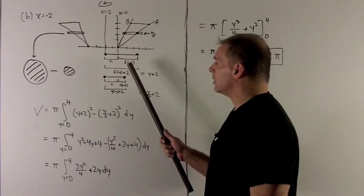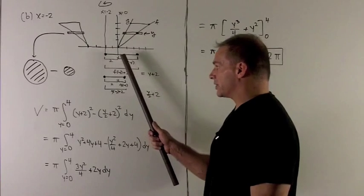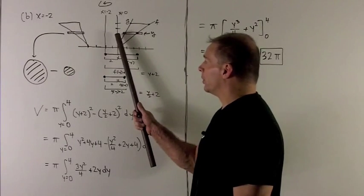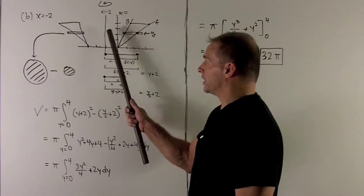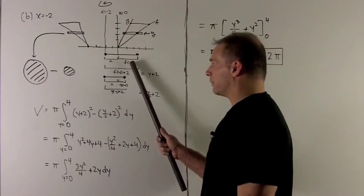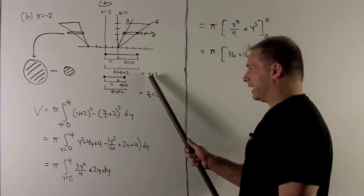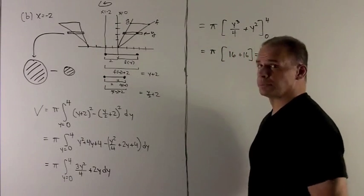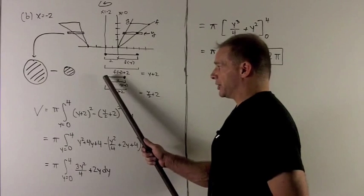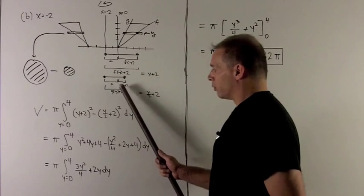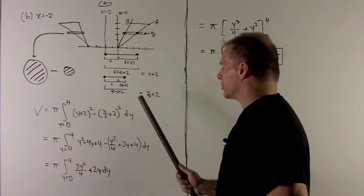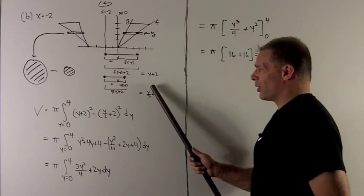In our last case, the outer radius was just given as the value f of y. Note, for my new radius, I'm not just traveling to the y-axis. I want to go 2 further to get to x equal to minus 2. So that means the new radius is going to be 2 plus f of y. That's going to give me radius at y of y plus 2. For the inner radius, it's going to be the same idea. To get to the line x equal to minus 2, we take our old radius, which was the function at y, g of y, and we add 2 to that. So I get g of y plus 2, or new inner radius, y over 2 plus 2.